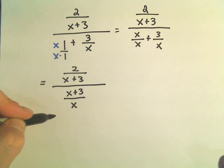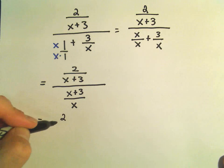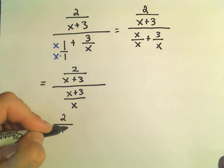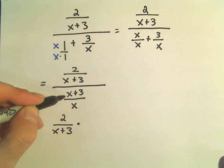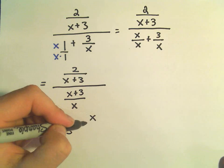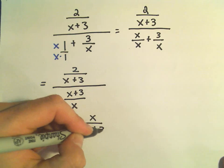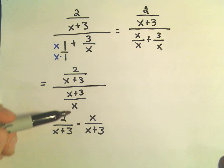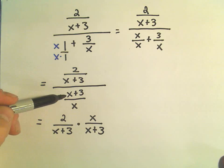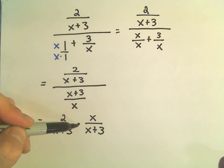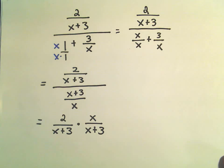And remember, the trick is, if you have a fraction divided by a fraction, we leave the top fraction alone, and we take the denominator, we flip it over, but we turn it into multiplication. Okay, so instead of divided by x plus 3 over x, we're multiplying by x over x plus 3.